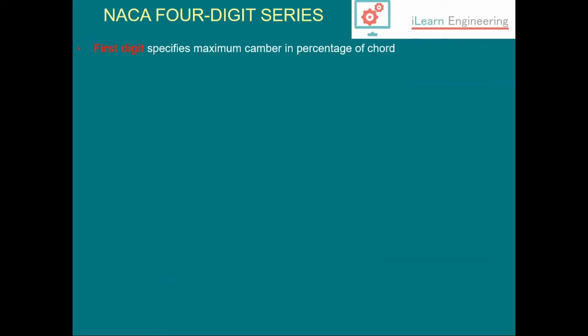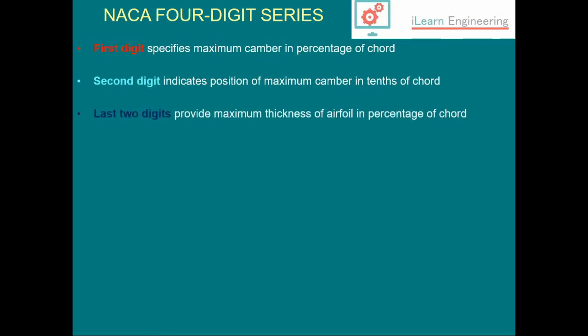Over the years, lots of airfoils have been developed. One of the most famous is the NACA series, including four digit and five digit series. For a four digit NACA airfoil, the first digit specifies the maximum camber as a percentage of the chord, the second digit indicates the position of maximum camber as tenths of a percentage, and the last two digits specify maximum thickness as a percentage of the chord.